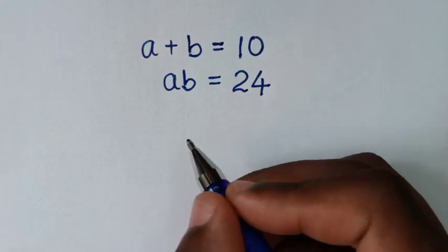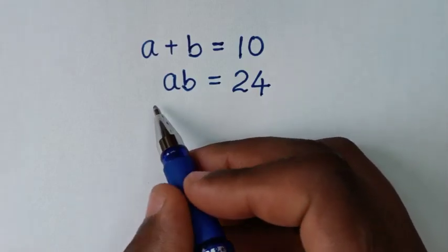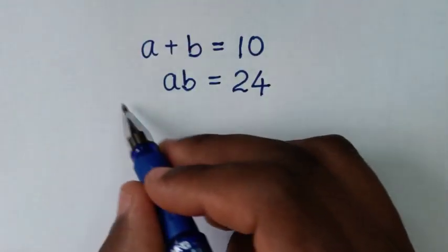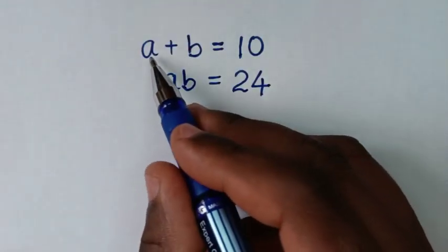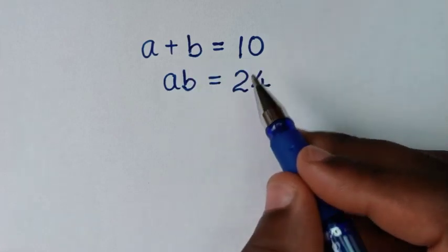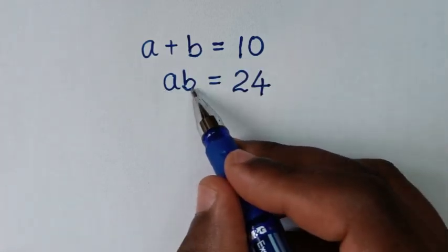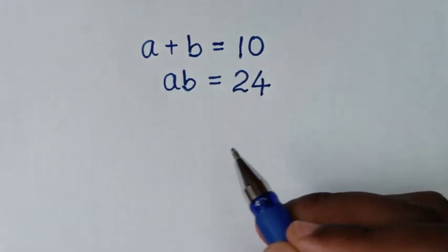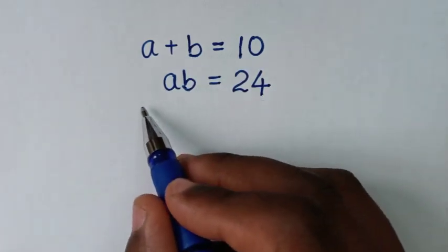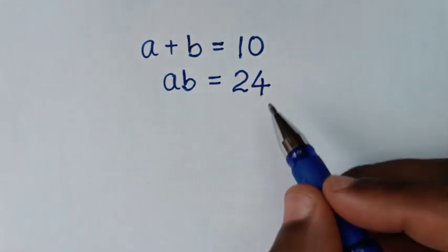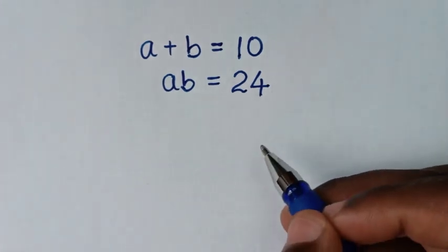Hello, you are welcome to solve this math problem, which is a plus b is equal to 10, and ab is equal to 24. We need to find the values of a and b from these two systems of equations.